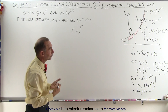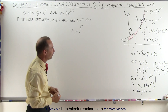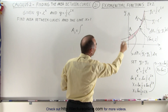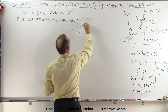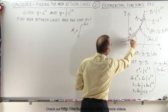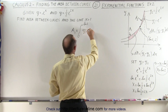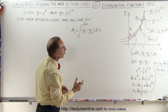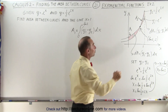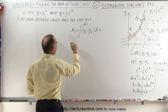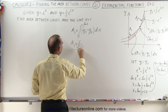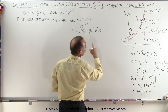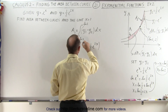When you plug in the natural log of 2 into the function, you get 2 for the y value. The limits for the first integral go from x equals 0 to x equals the natural log of 2. So A1 is equal to the integral from 0 to the natural log of 2 of dA, where dA is y1 minus y2 times dx. y1 is e to the x, and it's always a good idea to mark your functions so you don't make a mistake.